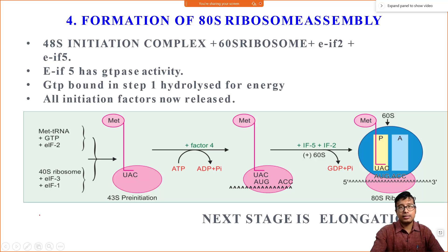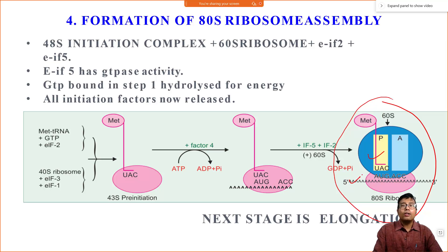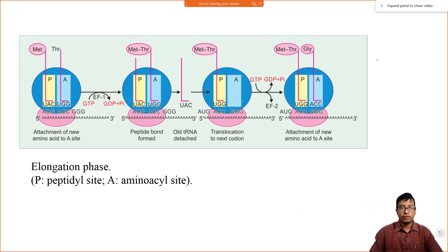This was the last slide from the previous lecture. If you have not seen the previous class, kindly go back, watch it, and then come back here. We paused at the ultimate step of initiation where both subunits of the ribosome along with the mRNA are assembled, the first aminoacyl tRNA has identified the start codon AUG, and methionine has attached to the tRNA. In prokaryotes it will be formyl methionine. In eukaryotes, this is the 80S ribosome assembly.